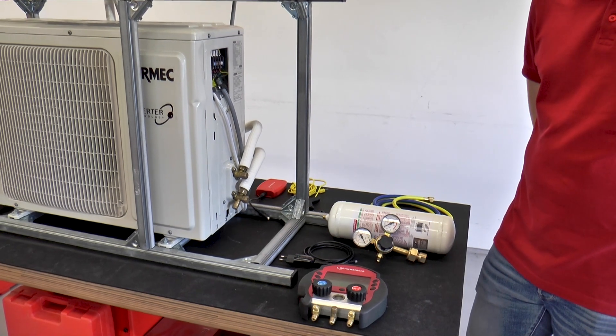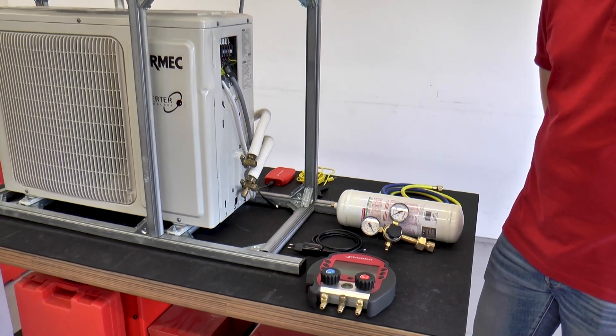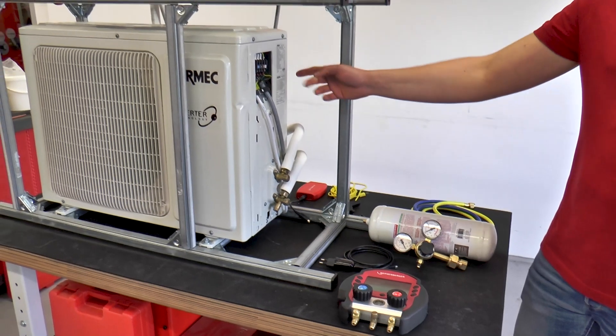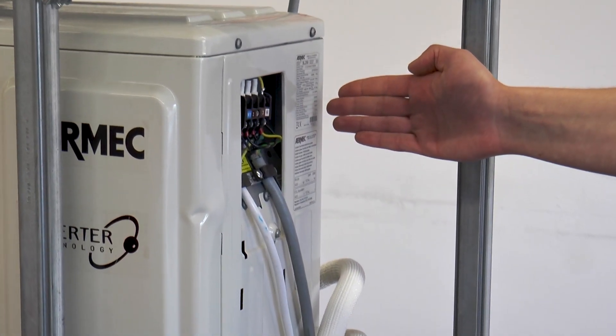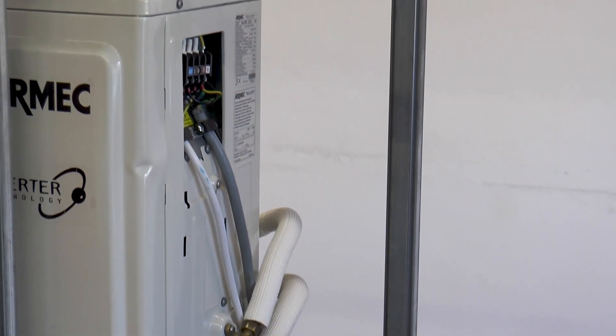The first step of the commissioning is the load test to maximum pressure. The maximum pressure of a system can be found on the manufacturer's specification plate. In this case it is indicated as 43 bar.